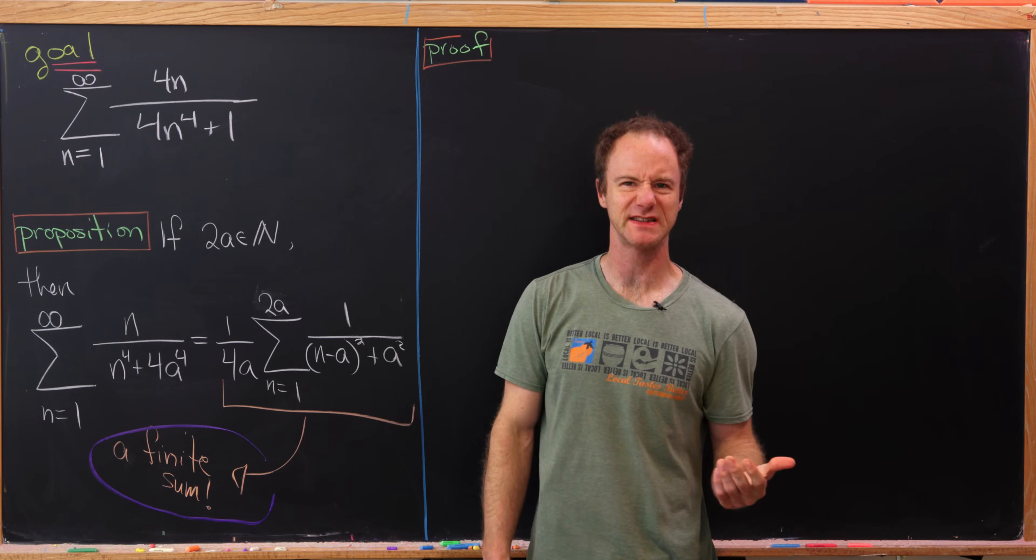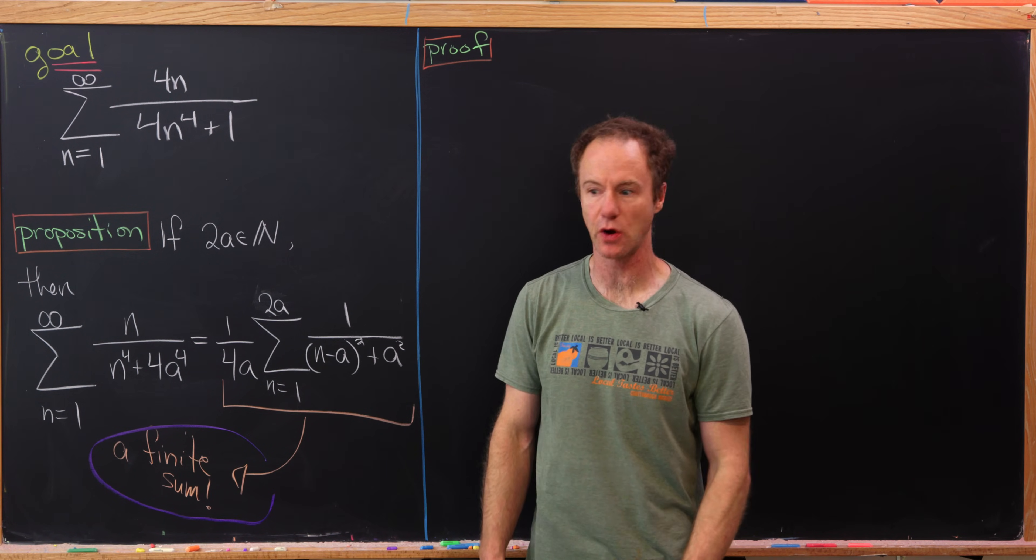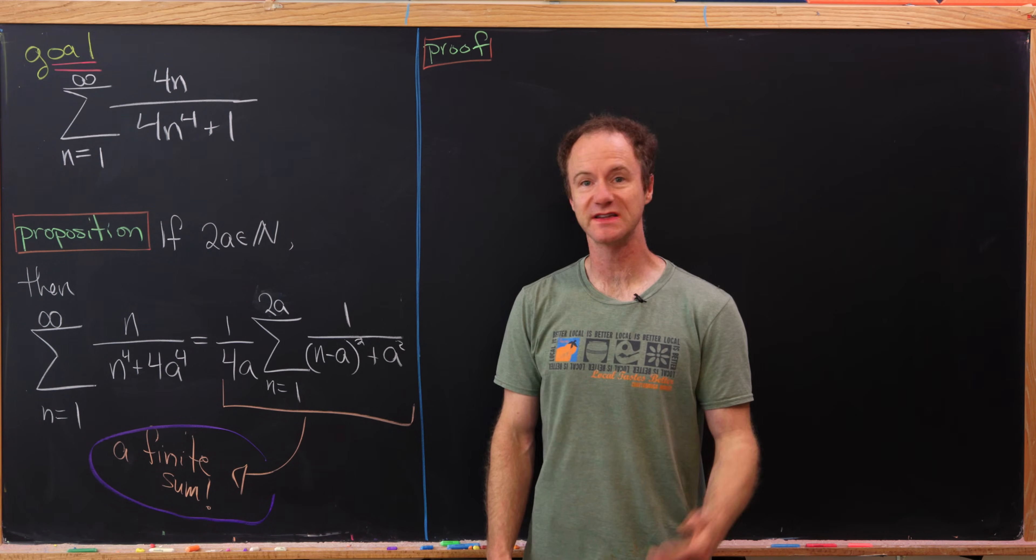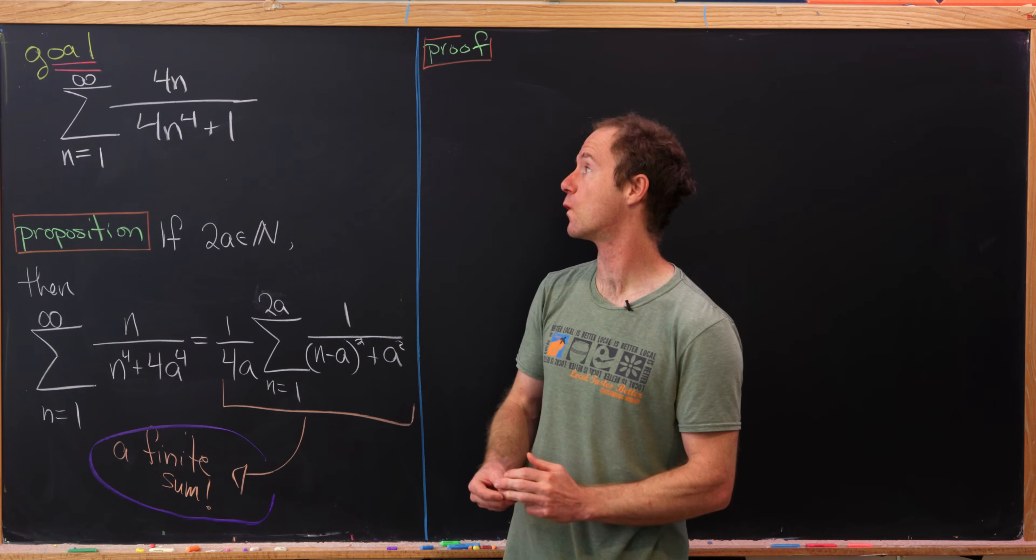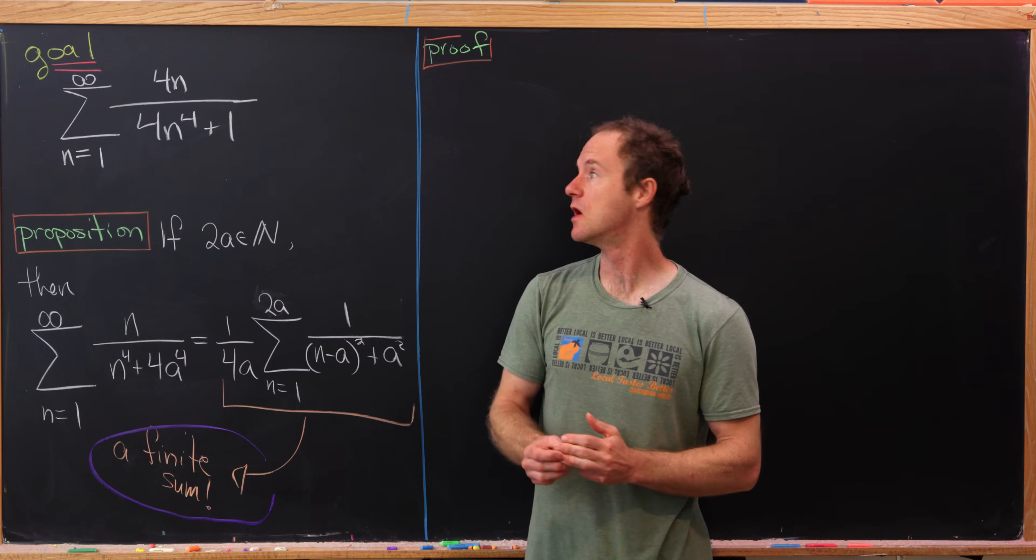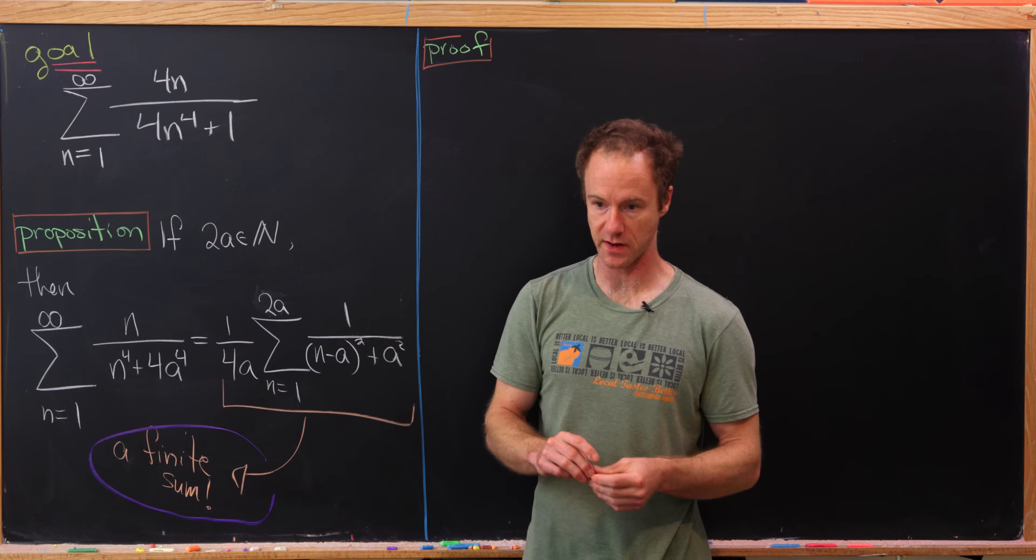Today we're going to find the sum of an infinite series using a trick which is totally new to me. So the series in question is the sum as n goes from 1 to infinity of 4n over 4n to the 4th power plus 1.